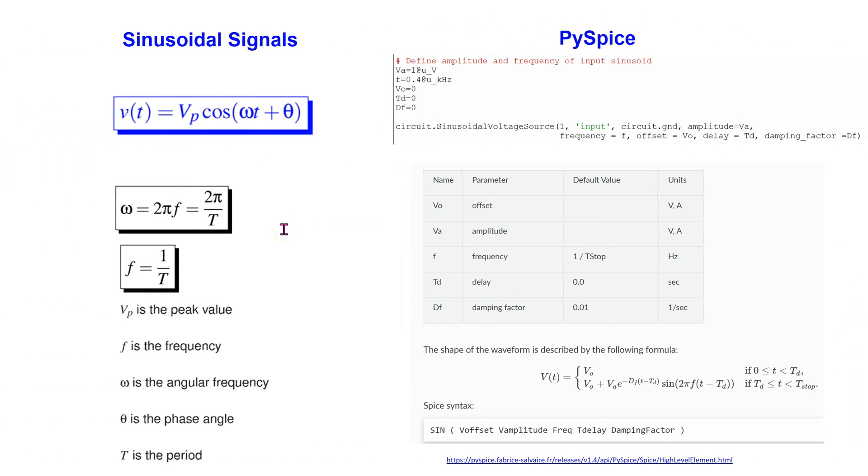Recall that a sinusoidal voltage source produces a voltage that varies sinusoidally with time. We can write a sinusoidally varying voltage as shown here, where vp is the maximum or peak value, t is the time period, f is the frequency, omega is the angular frequency which can be related to both time period and frequency, and theta is the phase angle.